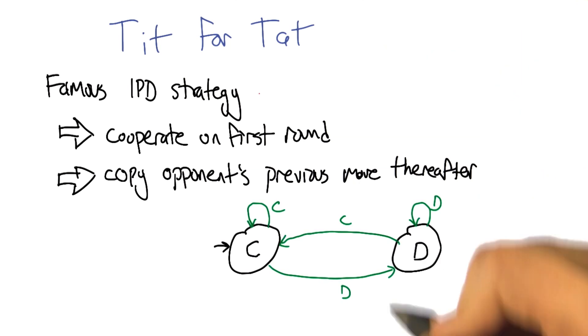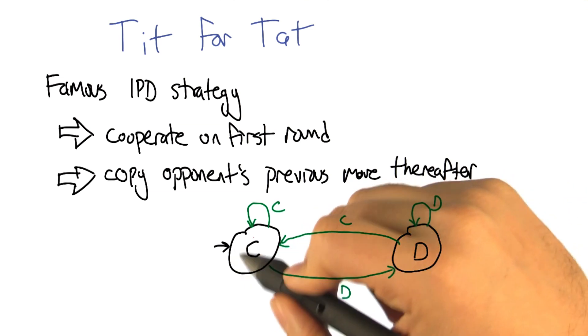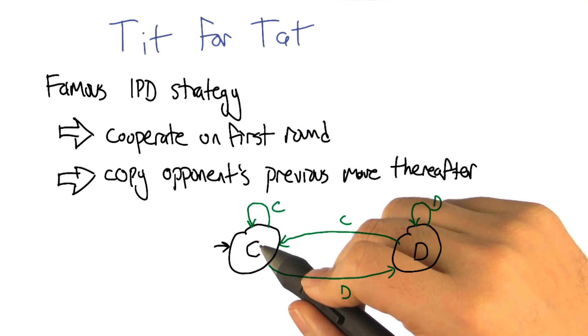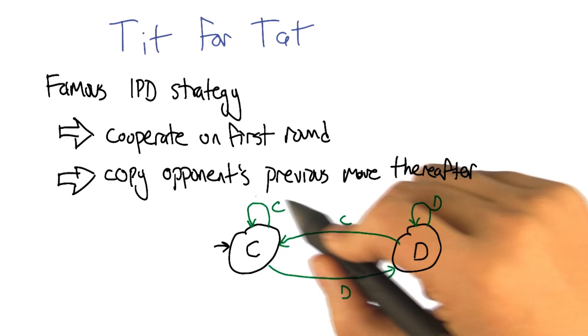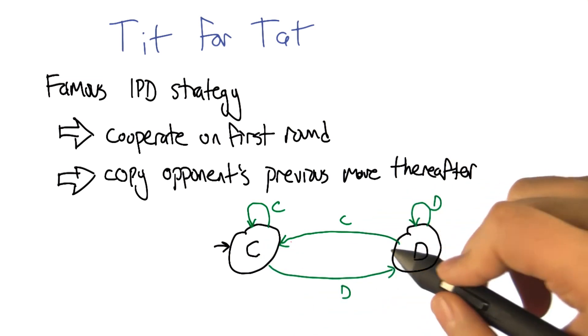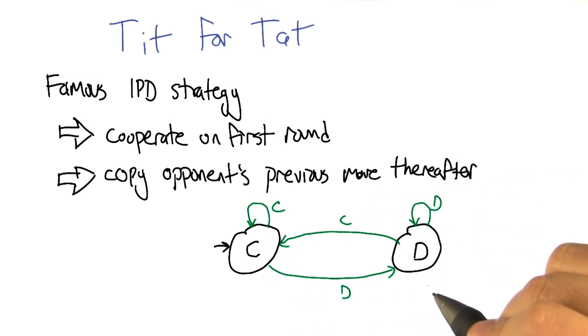In fact, we can represent the strategy as a little finite state machine like this. You can see exactly how it proceeds. It starts off cooperating, and then in each round it waits to see what the opponent does. That's the green letters here. And then it follows the corresponding arrow to determine whether it is going to cooperate or defect in the current round.